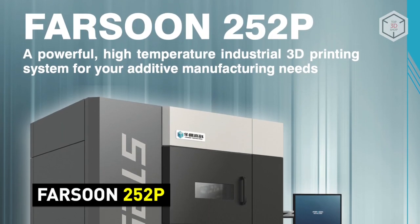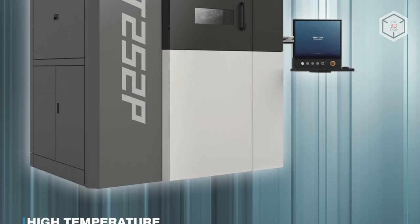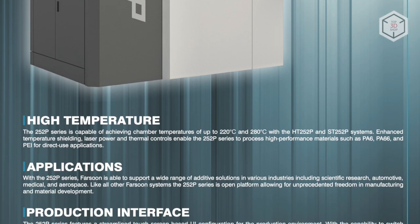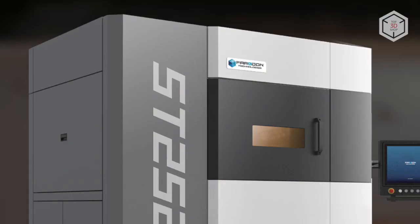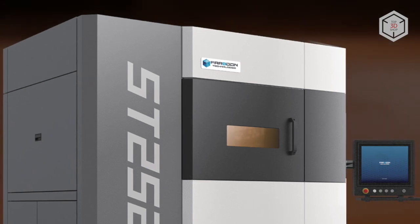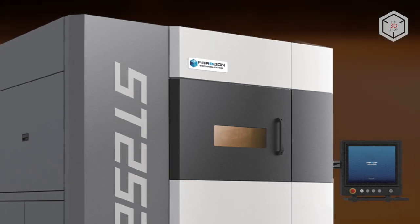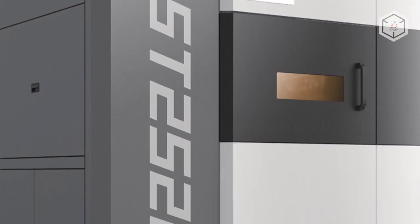The Farsoon 252P is an industrial grade SLS 3D printer which is available in two modifications ST252P and HT252P. The main difference is in the maximum chamber temperature 280 and 220 degrees respectively enabling the ST252P to print with a wider range of materials and adding high temp powders to the standard set.